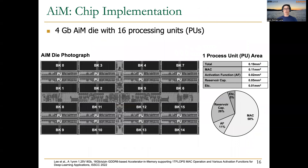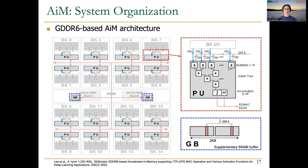From another major DRAM vendor, SK Hynix, we learned about the AIM architecture. This one is based on GDDR6, and similar to HBM PIM, it places small processing units near each memory bank. It shares with the Samsung FIM DRAM architecture the fact that they target machine learning and artificial intelligence workloads. You can see the processing units, which are based on an array of multipliers, an adder tree, an accumulator, and a special unit for activation functions.